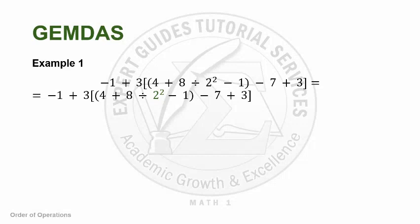Looking at that expression, which one has an exponent? Because following GEMDAS, after you notice the grouping symbol, exponent comes next. It's 2 squared, so that's what we perform first. Our equation would be negative 1 plus 3 times the quantity 4 plus 8 divided by 4 minus 1 minus 7 plus 3.